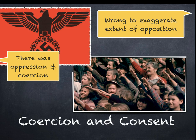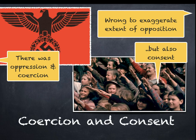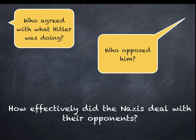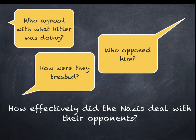Coercion basically means forcing somebody to do something against their will. There was, however, consent. Hitler was reasonably popular throughout the 1930s, more so than the Nazi Party itself actually, but there was also consent, especially from certain groups in society. So how did the Nazis deal with their opponents? Who agreed with what Hitler was doing? Who opposed him? And how were they treated?